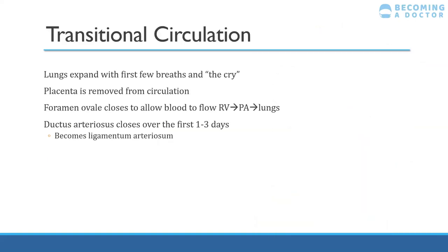Transitional circulation — why is everyone obsessed with that crying? Because that's when the baby's lungs are expanding. With the first few breaths of a neonate, and that cry, the lungs expand. With premature babies, their lungs are underdeveloped, which is why they give respiratory stimulants like caffeine to help the baby breathe while the lungs are still expanding. The placenta is taken away and the lungs take over as the oxygenator of the blood.